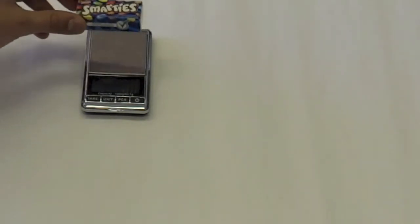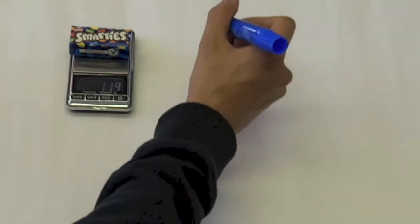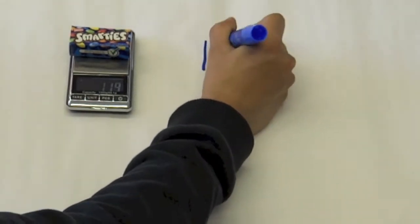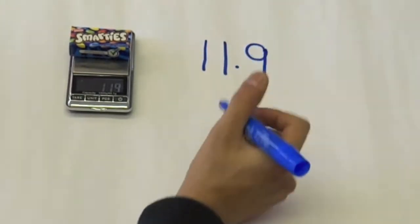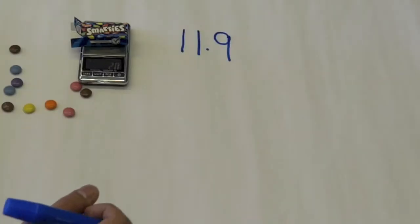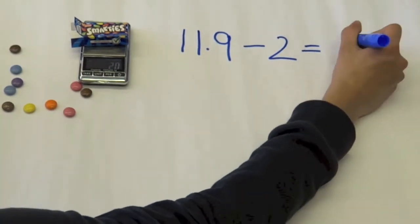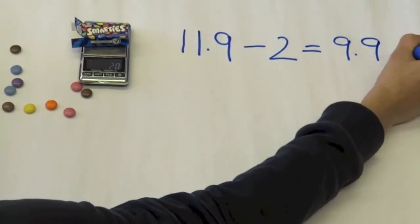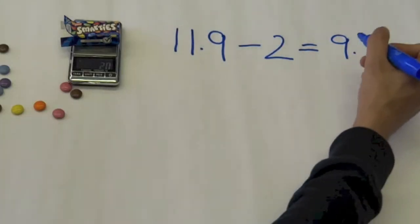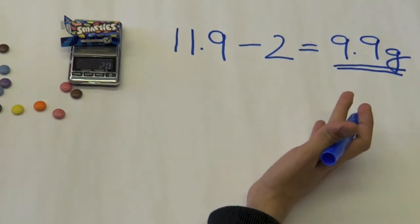So I've turned on the scale and I'm going to put a box of Smarties on it. It says it weighs 11.9 grams. Now I'm going to empty this box. So now I'm going to weigh the box and it says 2 grams, which gives us 9.9 grams. As you can see the weight is close to what it says on the box but it's not exact.